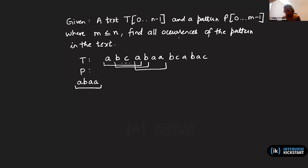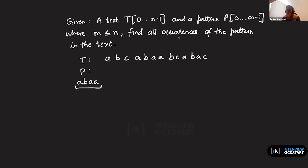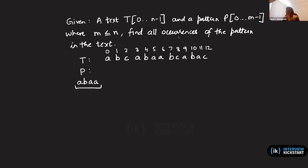Since we must find all occurrences of P within T, we keep continuing and look at every substring of length 4. We characterize the solution by the starting position in T where we find the pattern. The starting positions are 0 through 12; positions 10, 11, 12 don't really start a valid window since the pattern is of length 4. There is one occurrence of the pattern in the text.